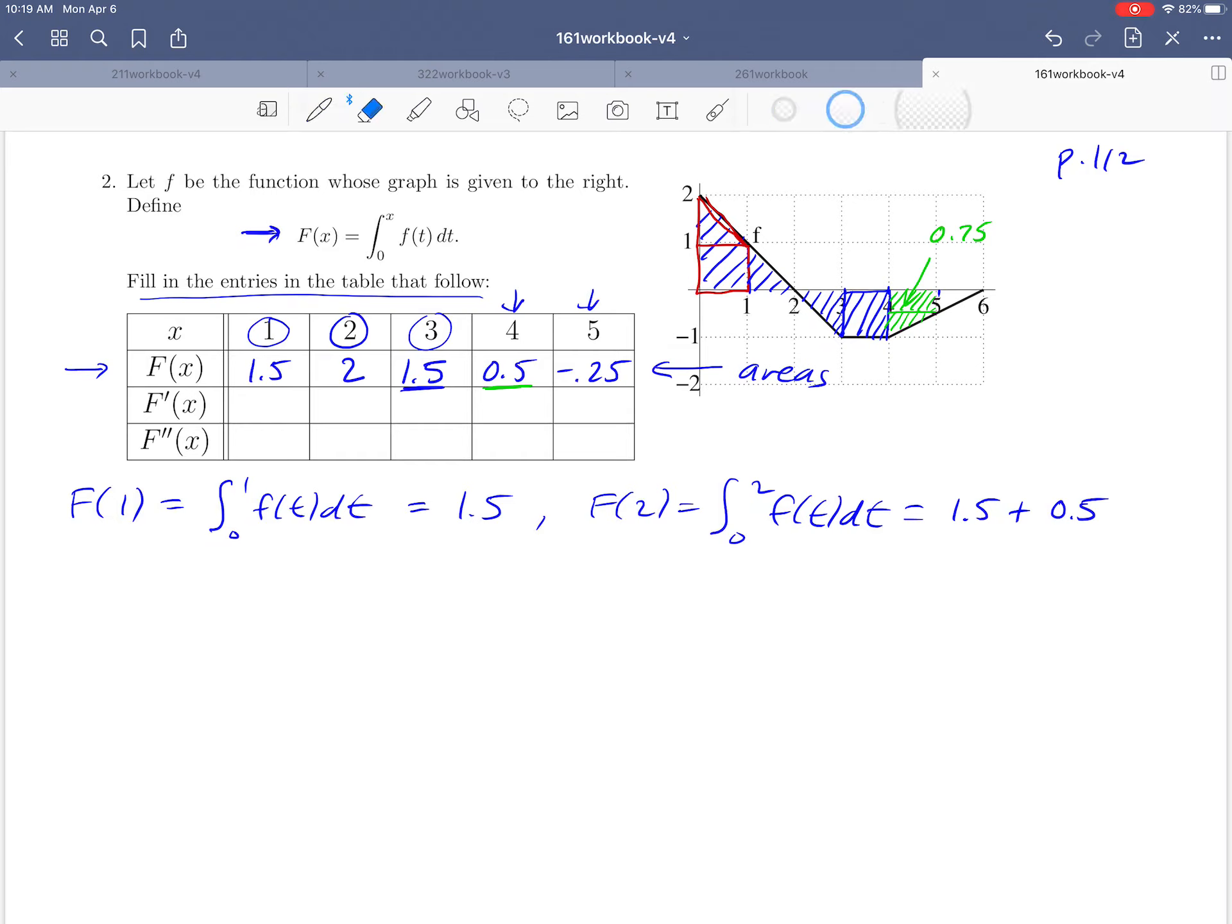We've completed the first row. Moving to the second row for F'(x), let's recall that F(x) is defined as an integral. Taking the derivative of both sides, F'(x) equals the derivative of the integral. By the fundamental theorem of calculus, the derivative and integral cancel, leaving us with F'(x) = f(x).